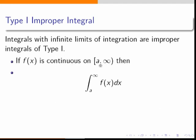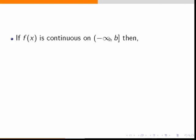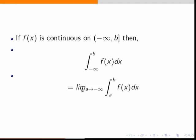If f(x) is continuous on [a, ∞), then ∫ₐ^∞ f(x) dx is evaluated as limit b→∞ of ∫ₐᵇ f(x) dx. Similarly, if f(x) is continuous on (-∞, b], then ∫₋∞ᵇ f(x) dx equals limit a→-∞ of ∫ₐᵇ f(x) dx. In each case we replace the infinite limit by a finite variable and then take the limit.